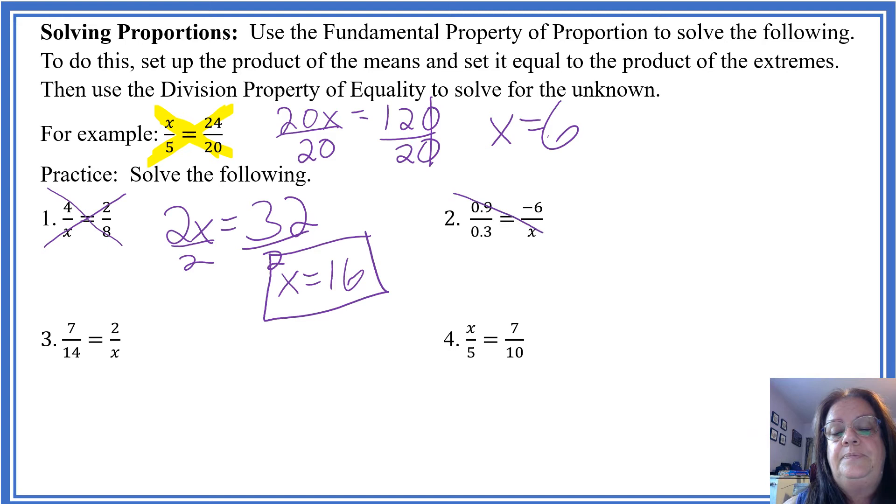Number 2. 0.9x. Well, you know what? I don't like that decimal. So we're going to get rid of that first, especially when you see that both of these in that proportion are decimals. So I can rewrite this as 9 over 3 equals negative 6 over x. Now it's a little bit easier. I don't have to worry about those decimals. So 9 times x equals 3 times 6, which is now a negative 18 because of the negative 6. Divide both sides by the coefficient of the x, and I end up with x equals negative 2.